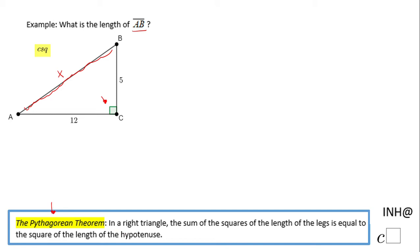We have one very important theorem, the Pythagorean theorem. It says in a right triangle like the one you see here, the sum of the square of the length of the legs is equal to the square of the length of the hypotenuse.